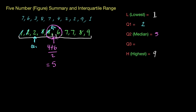On the right hand side it's a very similar thing — we're going to get the median of the right hand side. We've got six, seven, seven, eight, and nine. If I cross off six and nine, then cross off seven and eight, the remaining seven is sitting there by itself in the middle. So that's Q3, and I'm going to put number seven here as Q3. Now we've got our five number summary.